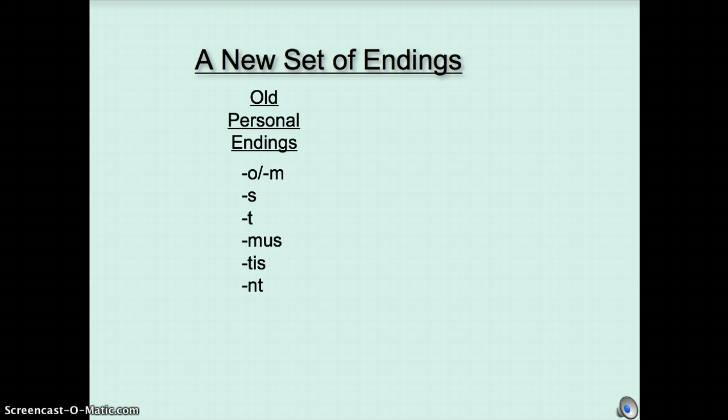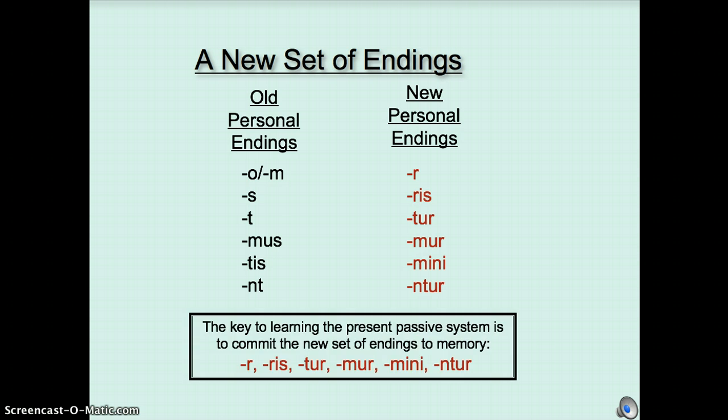For the passive voice in the present system, we replace those old personal endings with a new set of personal endings, and those are or, ris, tur, mur, mini, and ntur. Ar, ris, tur, mur, mini, ntur. Say it to yourself until you don't even have to think about it anymore.